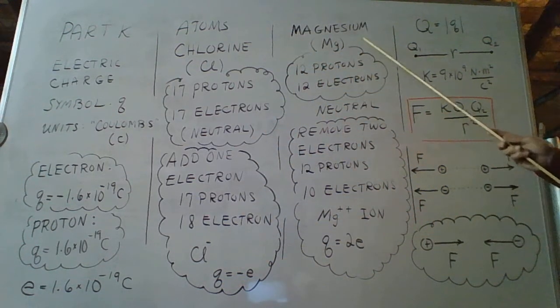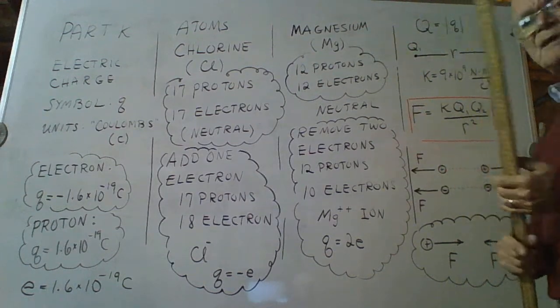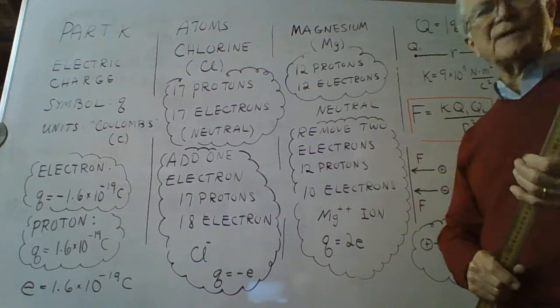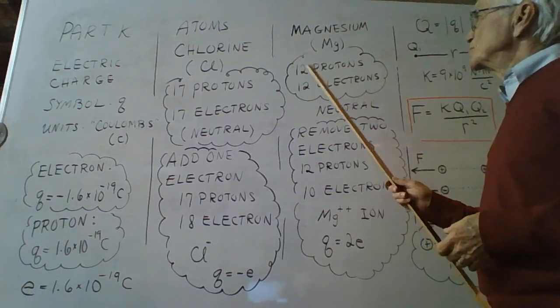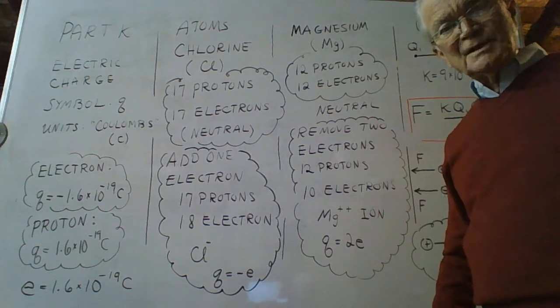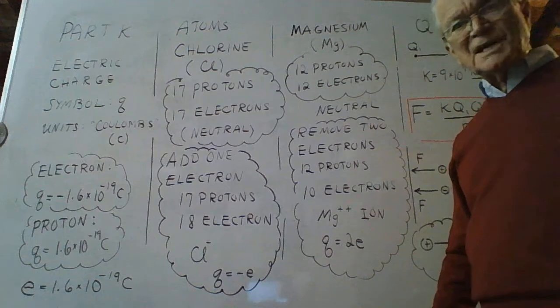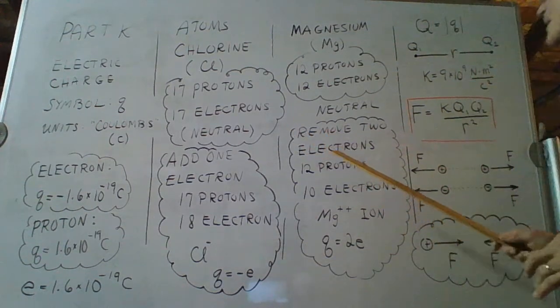Now let's look at magnesium. Magnesium is the 12th atom in the periodic table, the 12th element, I could say. And it has 12 protons in its nucleus and 12 electrons to make the atom neutral. 12 positives, 12 negatives, add them all together as zero.